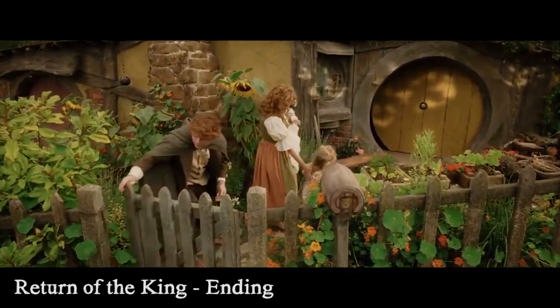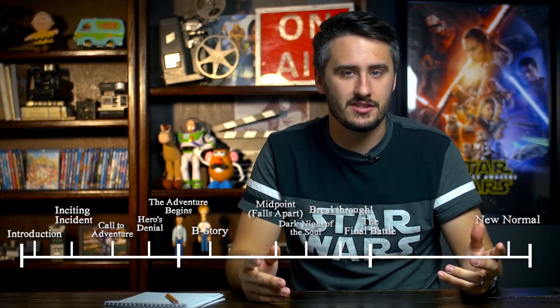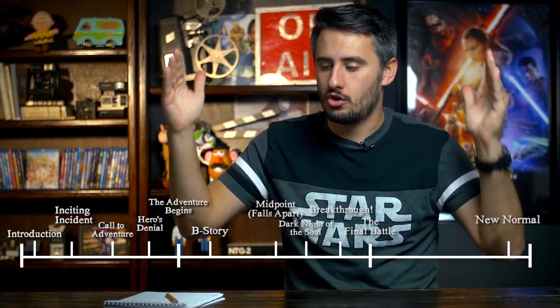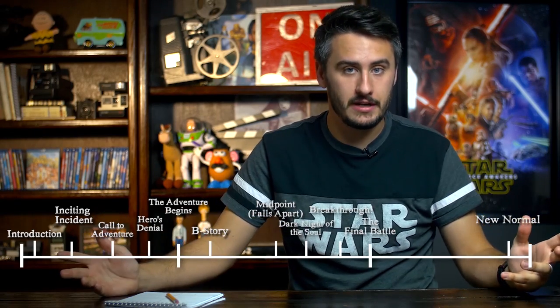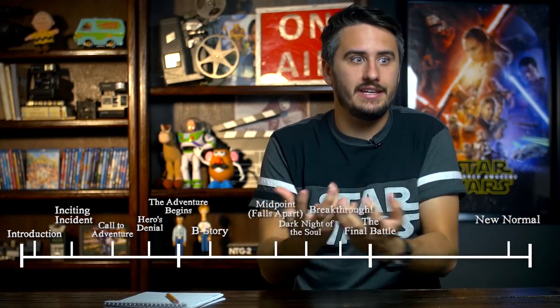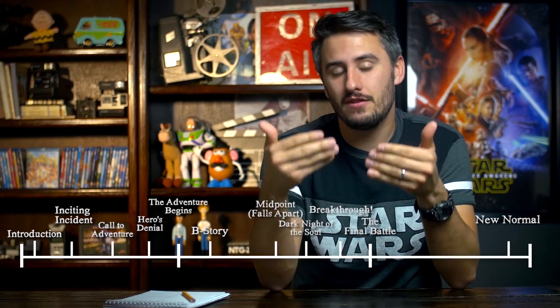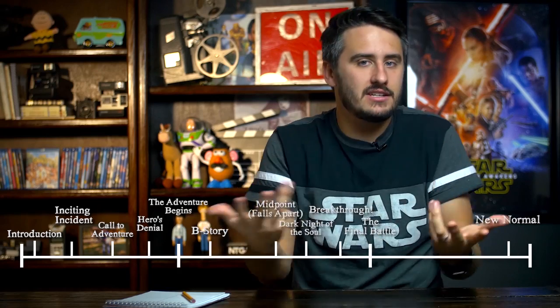And that is every movie you've ever seen. Now there are some exceptions — some movies don't fit perfectly on this timeline. But even films with strange flashbacks still have beginnings, dark nights of the soul, final battles, and inciting incidents. Even an 8-minute short film kind of fits: it usually has a normal world, an inciting incident, maybe a dark night of the soul, and a final battle. It always fits this timeline somehow.